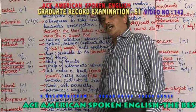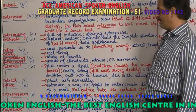Enumerate is a verb — you are listing out. Enumerate means mention one by one; mentioning one by one is called enumerate.